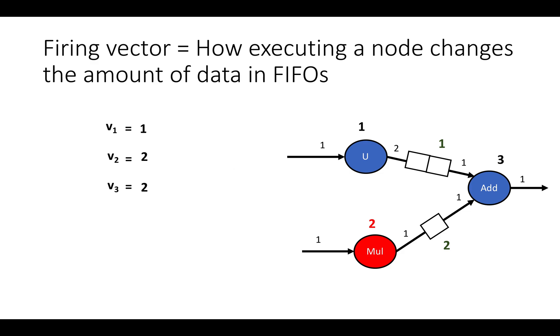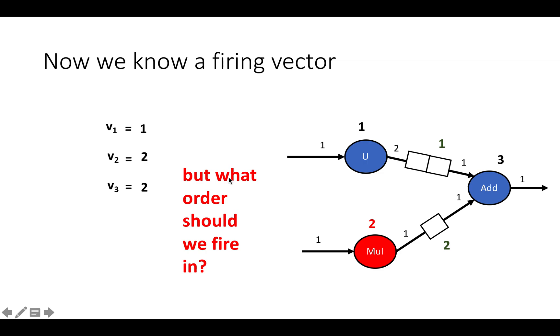It says how often each node needs to fire, or how many times each node needs to fire in our desired firing sequence, but it doesn't say the exact order of the firing. So when does the upsample's firing happen relative to these two firings of the multiplier, and when do these two firings of the adder happen relative to the fires of the multiplier? In other words, what's the ordering of these firings? What order should we fire these guys in?